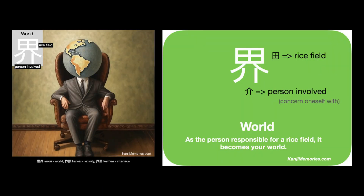We put the two cards together. Now look at the suggested association on the green card. As the person responsible for a rice field, it becomes your world. Imagine yourself being in charge of the family rice field, which everybody depends on to stay alive. As the person responsible for a rice field, it becomes your world.